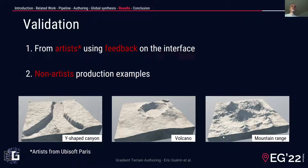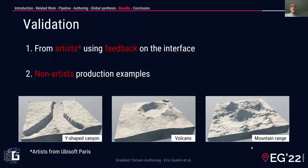We performed two different types of validation experiments. First, we asked artists to test our framework and provide feedback on the effectiveness of the authoring tools and the user interface. We found the tools efficient and intuitive, and artists managed to create examples conforming to their intent. Artists also encouraged us to display physical parameters such as altitude in meters or angles in degrees. We also asked non-artist users to author terrains according to a simple text-based description within a 10-minute time limit, covering a canyon, a volcano, and a mountain range. Almost all users pointed out that the tools were easy to use with a quick learning curve.